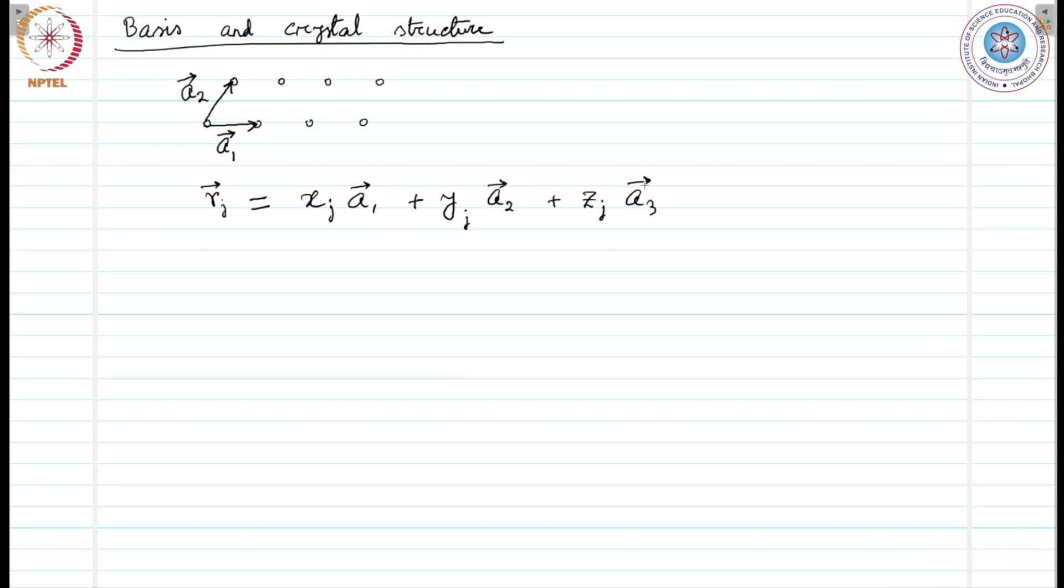So, making the associated lattice point the origin, we can have the values for xj, yj, and zj ranging between 0 and 1. So, we are setting the origin at the lattice point. The basis atoms will have this kind of position vector and xj, yj, zj, the coefficients of these lattice vectors will range within 0 and 1. It may be fractional.